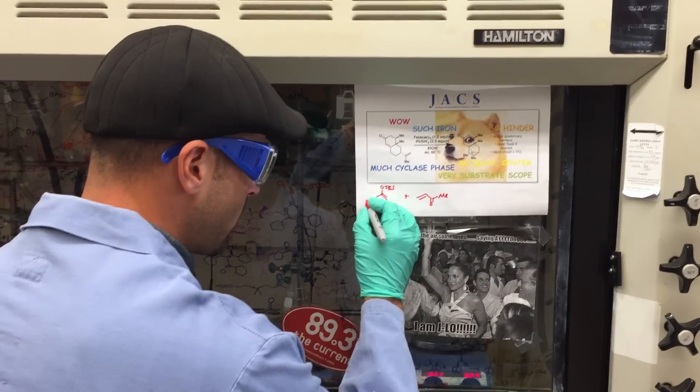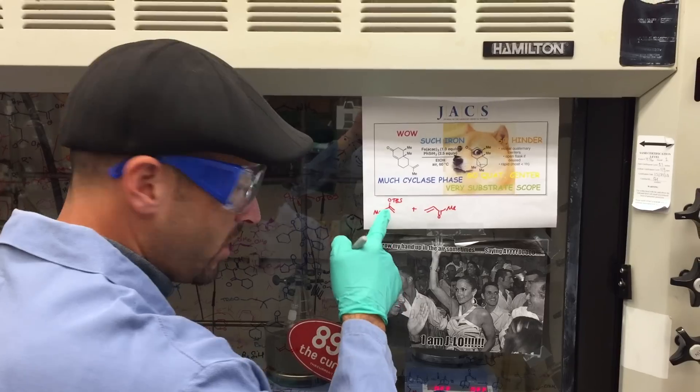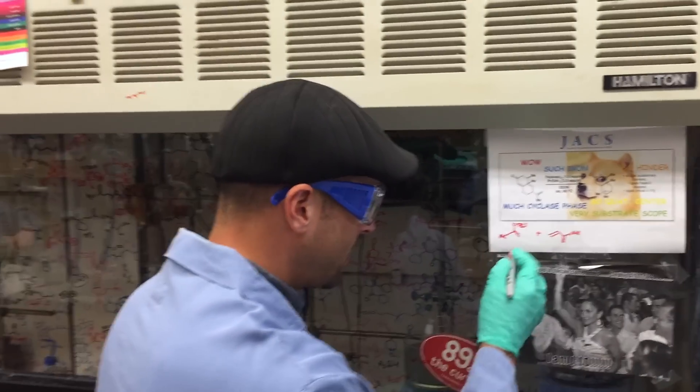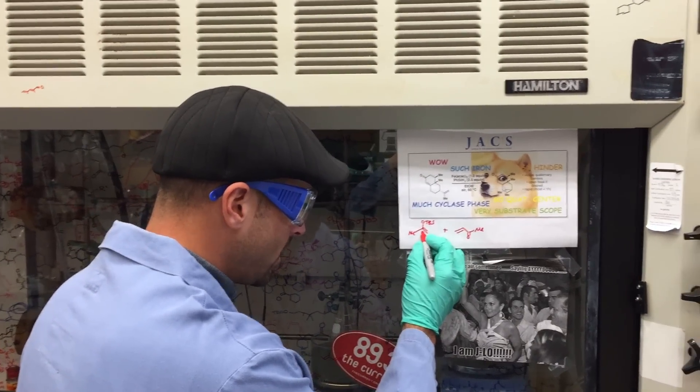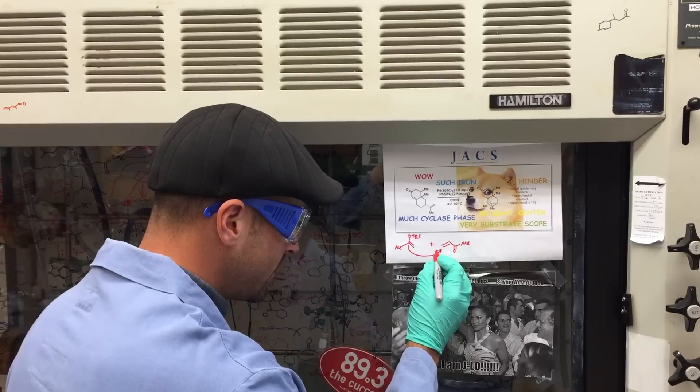Now, what's cool about this reaction, I think, is that you would expect that enol ether to attack right here to do a Morita-Michael type reaction, but instead we're going to make a quaternary center by joining that carbon atom to that one.